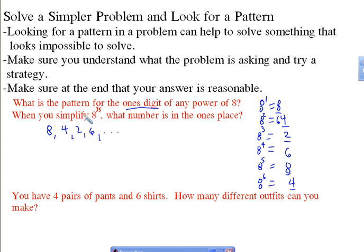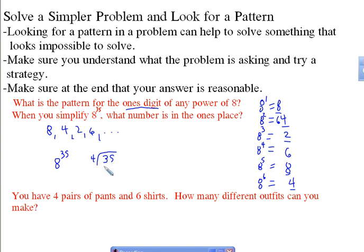Now, if I wanted to simplify — when you simplify this, if you were to multiply 8 times 8 times 8 times 8 times 8 times 8, 35 times, that would be a real pain. You can put it in your calculator, but you probably couldn't read the 1's place because it's such a big number. So if we wanted to do this, all we'd say is: there's a pattern of 4 different 1's digits. So if we want to find 8 to the 35th power, we just have to figure out how many sets of 4 go through. In 35, 35 divided by 4 gives 8 with 3 left over.